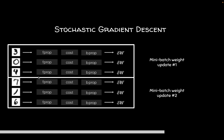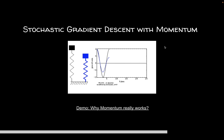A problem with this approach: what if one batch says the update is +1 and another says −1? You'll just keep oscillating between two points. You do have a learning rate, but if it's fixed — say 0.5 — you'll keep doing +0.5, −0.5, +0.5, −0.5, getting stuck between two points.